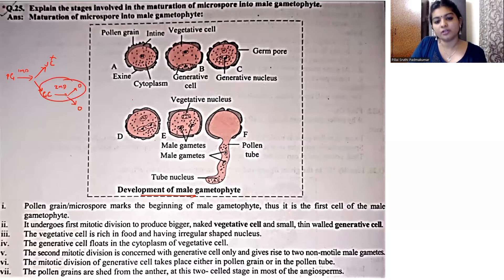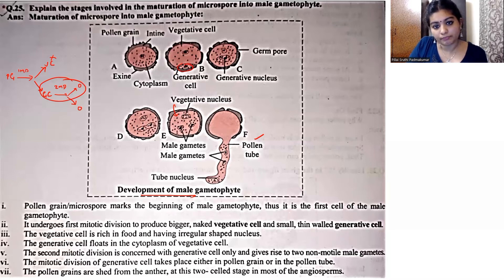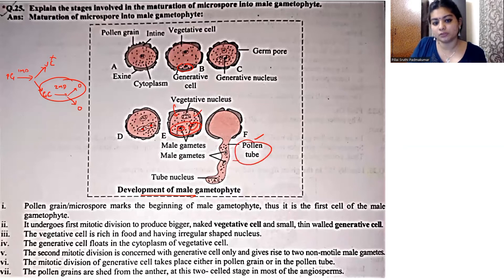अब यह जो second mitotic division है, यह दो जगह में हो सकता है — या तो within the microspore हो सकता है, या तो pollen tube के अंदर हो सकता है. जैसे diagram में clearly visible है, कि generative cell आगे जाके दो cells में divide होगा — पहले karyokinesis यानि nuclear division हो रहा है, उसके बाद cytokinesis यानि cytoplasmic division हो रहा है.